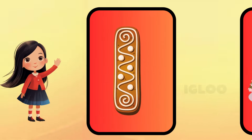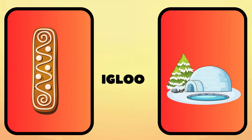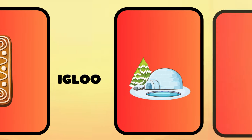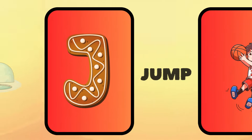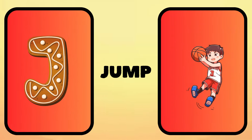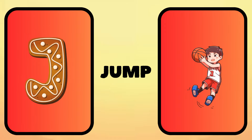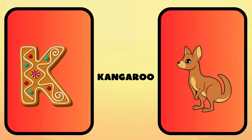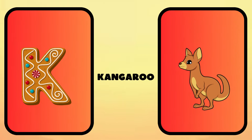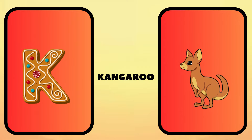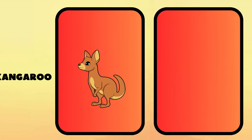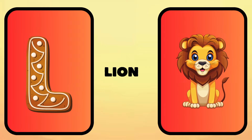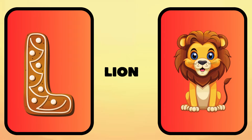I is for igloo, i-i-igloo. J is for jump, j-j-jump. K is for kangaroo, k-k-kangaroo. L is for lion, l-l-lion.